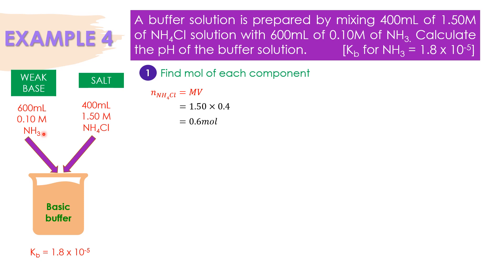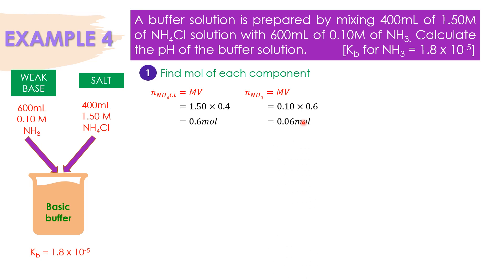The second one, kita akan cari number of moles untuk NH3 pula. Molarity 0.10 molar. Volume is 600 ml, convert into liter: 0.6 liter. Substitute the values — number of moles for NH3 is 0.06 moles.